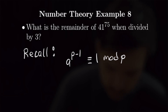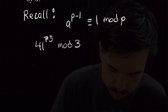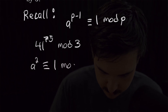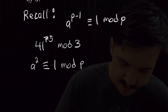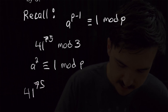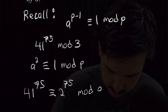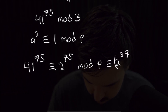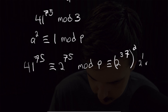So for this, we have 41 to the 75th power and we're trying to reduce mod 3. What we're going to want to do is rearrange this 41 so that we have something to the second power congruent to 1 mod p, and then reduce whatever we have left over. To begin, we know that 41 is congruent to 2 mod p, which means we can write that 41 to the 75th power is congruent to 2 to the 75th mod p. We can rewrite that as 2 to the 37 squared, which will be congruent to 1 mod p by Fermat's Little Theorem, times 2 to the first power mod 3.